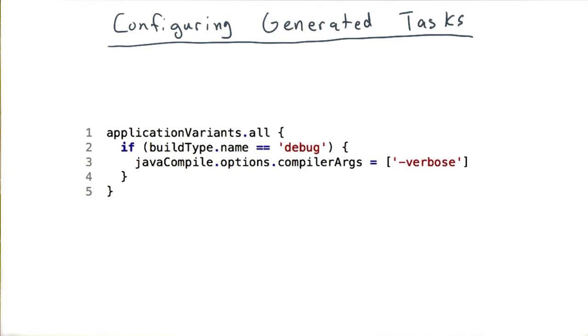This problem is solved by what Gradle calls live collections. Essentially, as the Android plugin creates variants, they are added to a fancy type of collection. These collections allow us to define configuration for objects that don't yet exist. Instead, Gradle will remember our configuration and execute it when a new object is added.